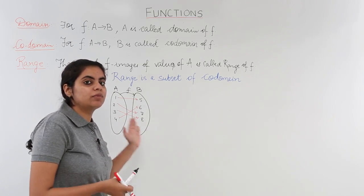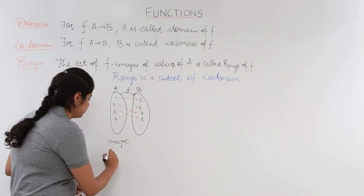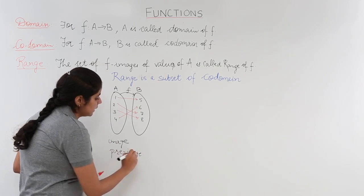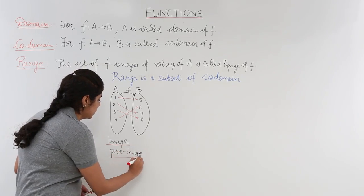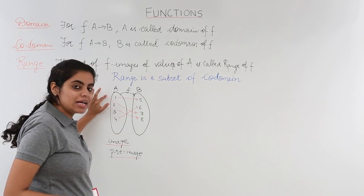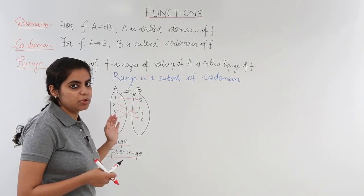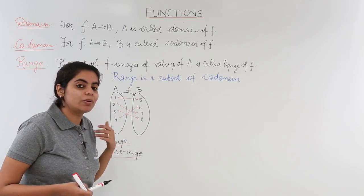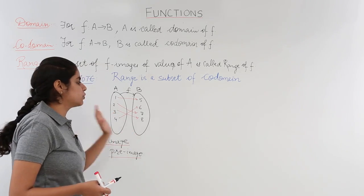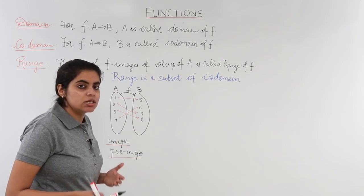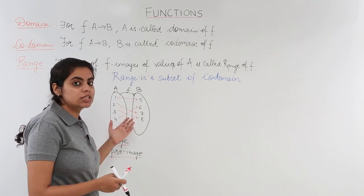The terminology I want to teach with this example is image and pre-image — two important terms in the topic of functions. Moving back to the example: 1 has been associated with 5, so the image of 1 is 5. 2 has been associated with 7, so the image of 2 is 7. 3 has been associated with 8, so the image of 3 is 8.